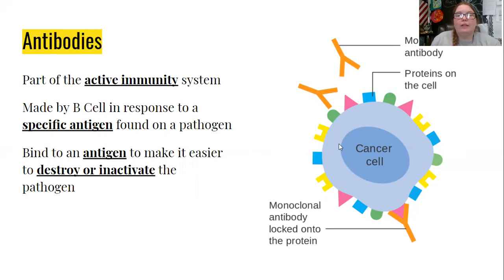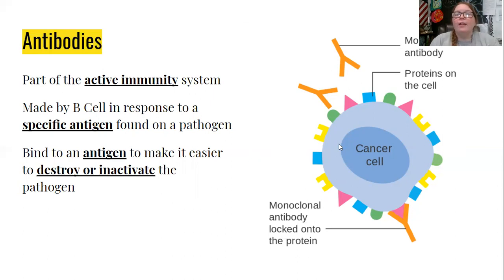Here we have a picture of a cancer cell. Your immune system is sometimes able to recognize when a cell is cancerous because it's putting up the wrong markers. When treating cancer, they can create antibodies to get your immune system to attack the cancer, which is pretty cool.